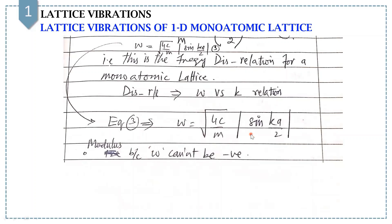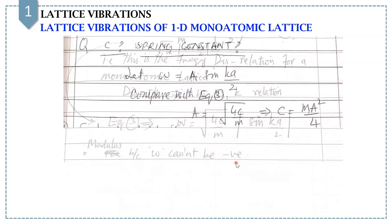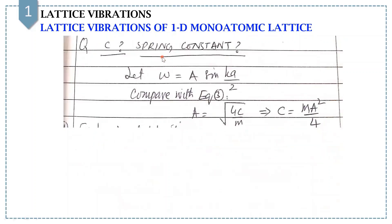Please keep in mind the modulus in the expression, because omega cannot be negative. If we write omega equals A·sin(Ka/2) and compare with equation number 3, we get A equals sqrt(4C/M), which is nothing but U_0.